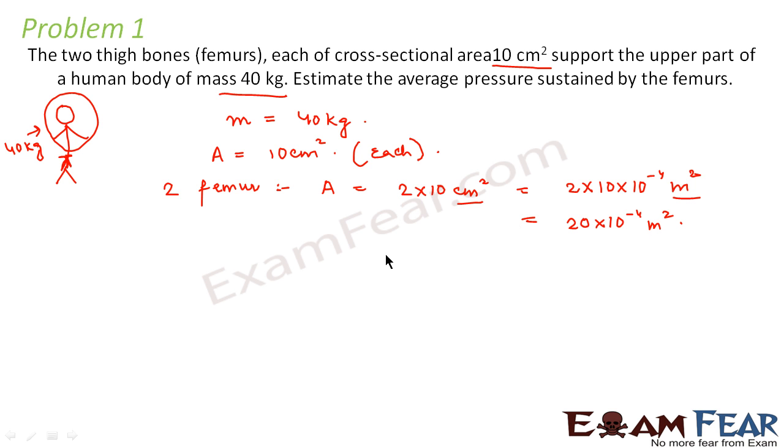So this is the cross sectional area. Now we have to calculate the average pressure. In order to calculate pressure, we need two things: force and area. Area we already know. Now let us calculate force. Force would be nothing but the weight due to the body, which is mg, the force acting vertically downwards. So force will be equal to m into g.